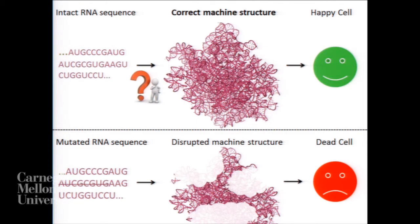Although this looks like a giant ball of spaghetti right here, the precise structure of this machine is necessary for the cells to live. With this background information, I ask the following questions: What enables this transition from this sequence to this intricate structure? What factors control this transition?